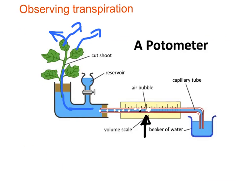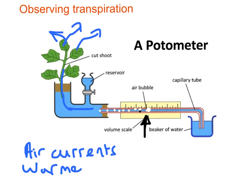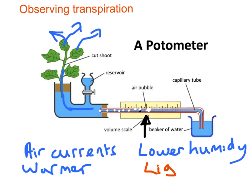What can we do to increase the rate of transpiration? We can blow air across the leaf — air currents speed up transpiration. We could also warm up the surroundings; in warmer temperatures the bubble moves faster because water evaporates from the leaves more quickly. We can also lower humidity: if we dry out the air around the plant, it loses more water. And by shining light on the plant, transpiration speeds up because the stomata open more.